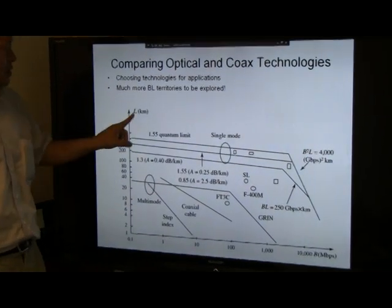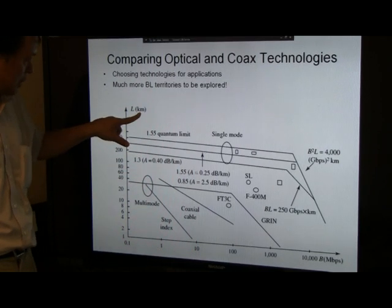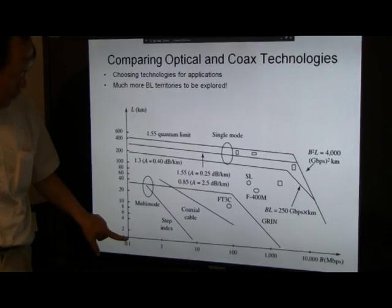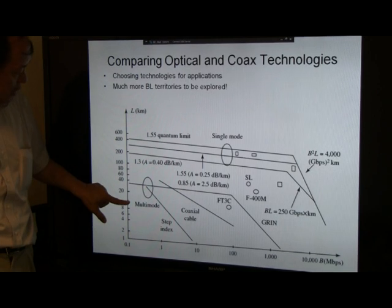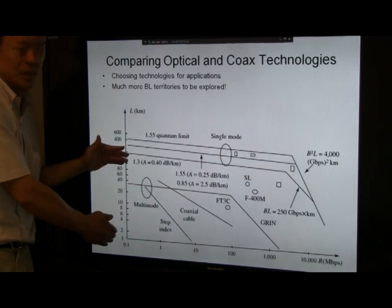On the y-axis is the parameter L, the distance measured in kilometers. It goes from 1 kilometer, 10 kilometers, 100 kilometers to 1,000 kilometers. Again, this is a logarithmic scale.